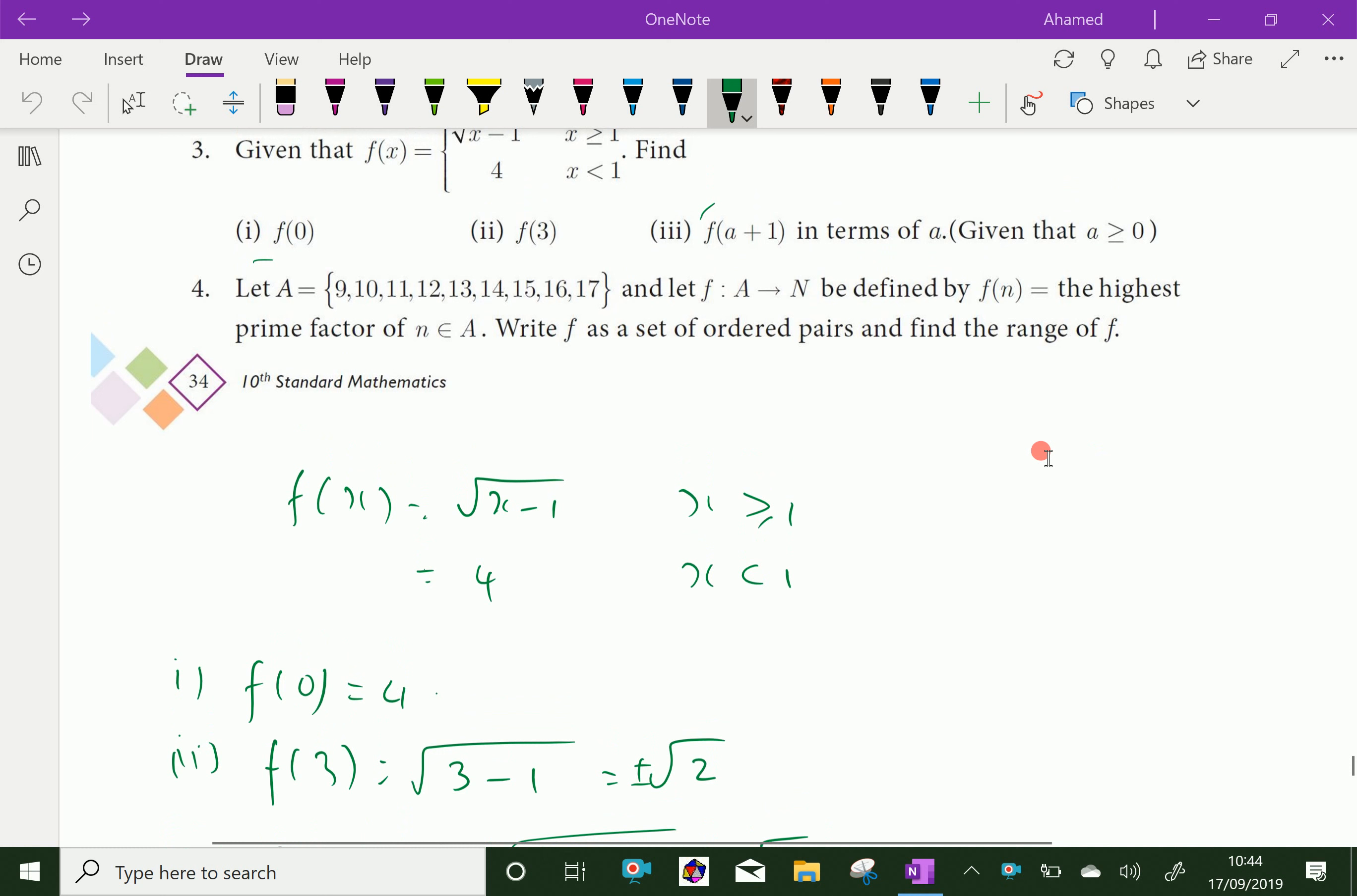Now let us do the next question, question 4. Let A equal 9, 10, 11, 12, 13, 14, 15, 16, 17, and let f from A to N be defined by f of n is the highest prime factor of n, which is an element of A. Write f as a set of ordered pairs and find the range of f.